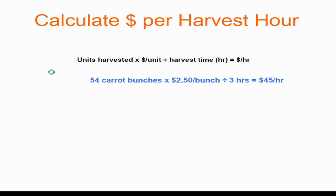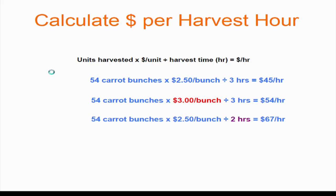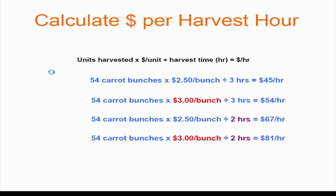Let's look at a concrete example: if you have 50 carrot bunches to harvest, it takes about three hours, and you can sell them at $2.50 a bunch — that's $45 an hour. If you raise your price, you can get to $54 an hour. If you can do it in less time, suddenly you're at $67 an hour. And if you raise your price and do it in less time, you're at $81 an hour. This corresponds to that $40,000 to $60,000 range on the previous slide.